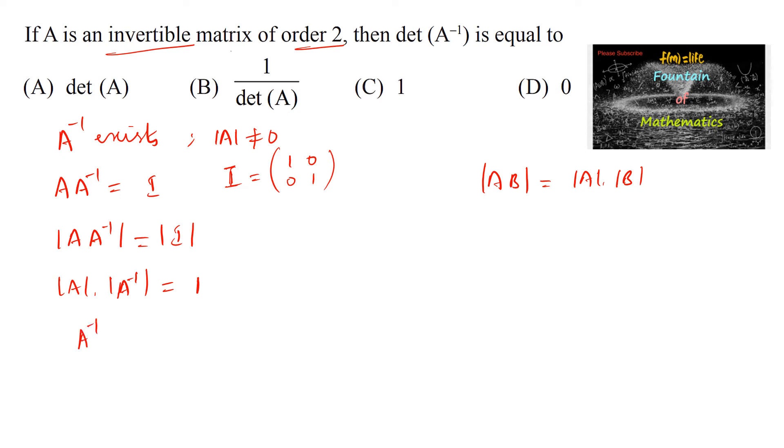And we can write determinant of A inverse is equal to 1 upon determinant of A. So therefore, determinant of A inverse is equal to 1 by determinant of A, which is option B, right?